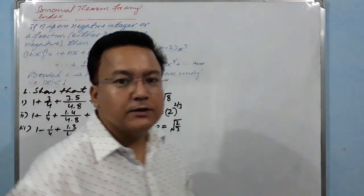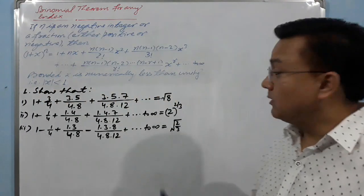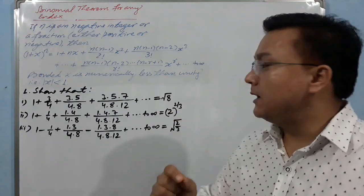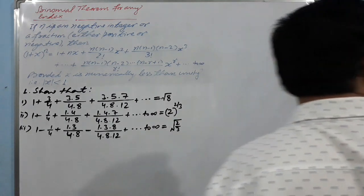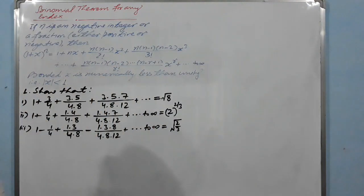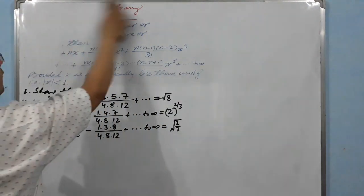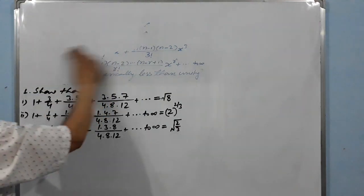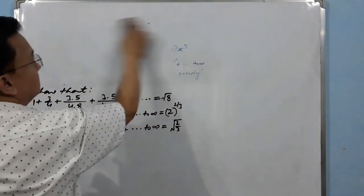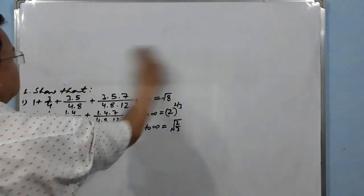All three questions are of the same type and use exactly the same method. If I show you one question, you can easily do the remaining two. All three are very important. I'll remove the theorem from the board to make space.